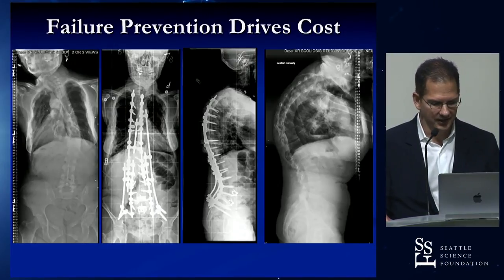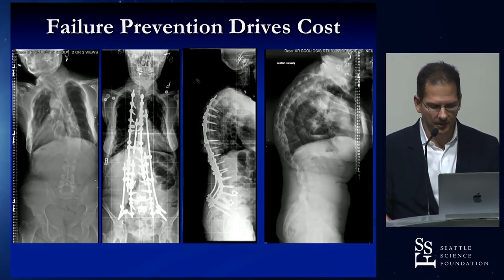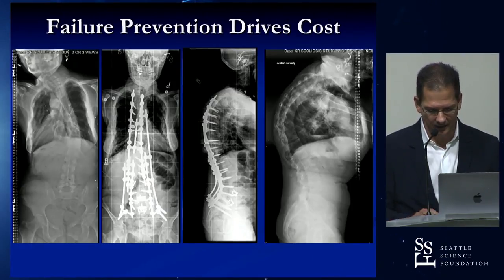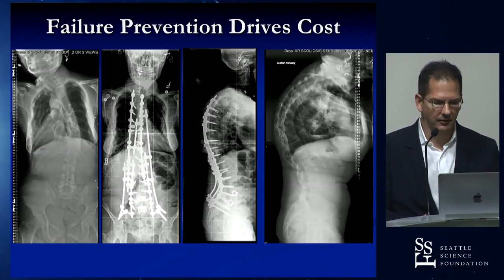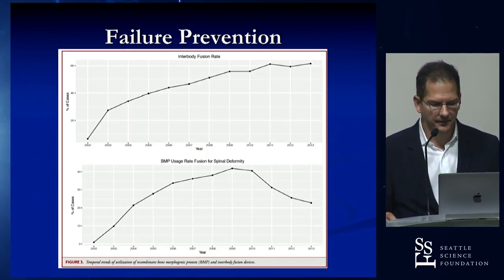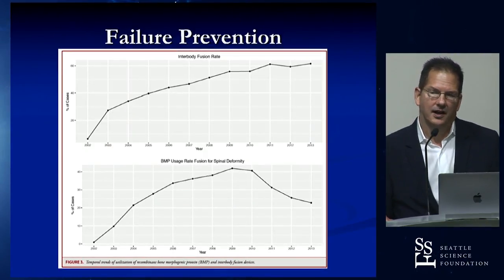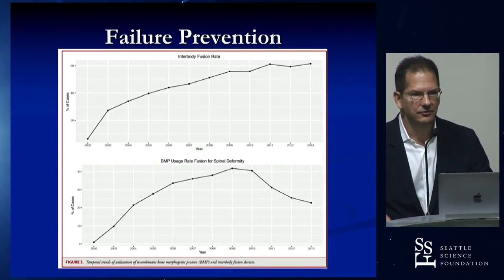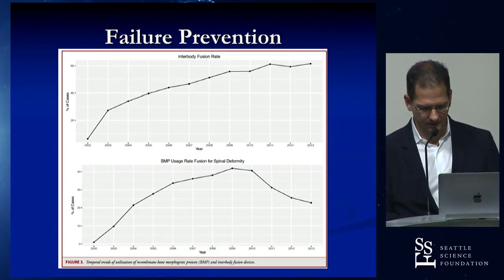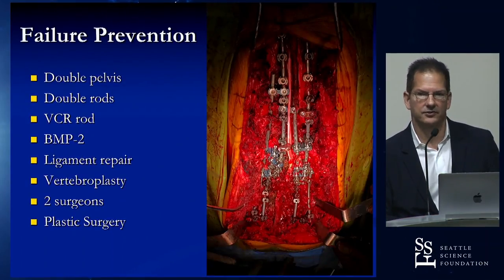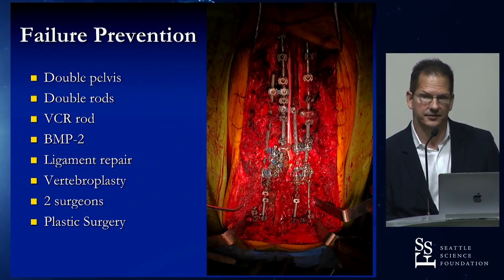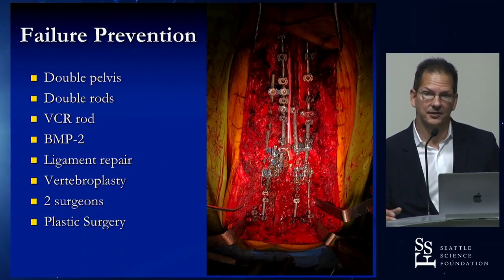Looking at an older patient we operated on at UCSF — she had a VCR, lumbar osteotomies, multiple rods, ligament tethers, BMP, and many other things to prevent revision. The use of interbody fusion and BMP is going up — not driven by commercial bias, but because we're trying to prevent revision. We now use double pelvis fixation, two pelvic screws per side, double rods, VCR rod, BMP2, ligament repair, vertebroplasty, two surgeons, and plastic surgery. This is tremendously burdening the health system.